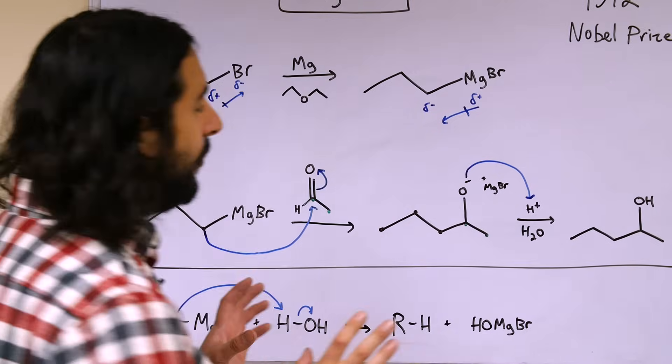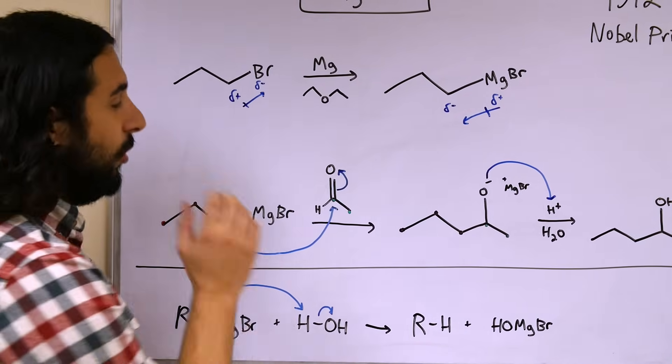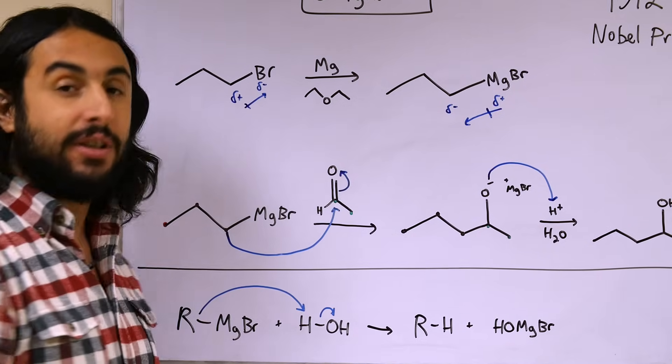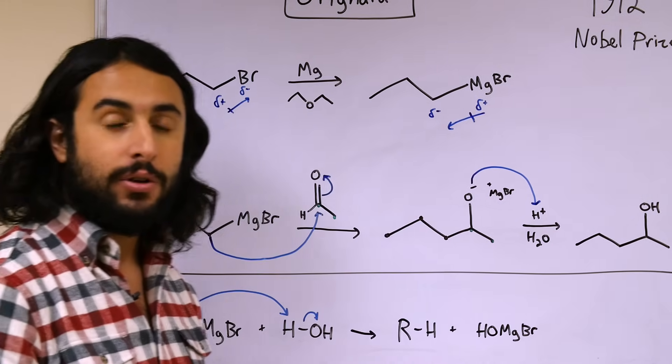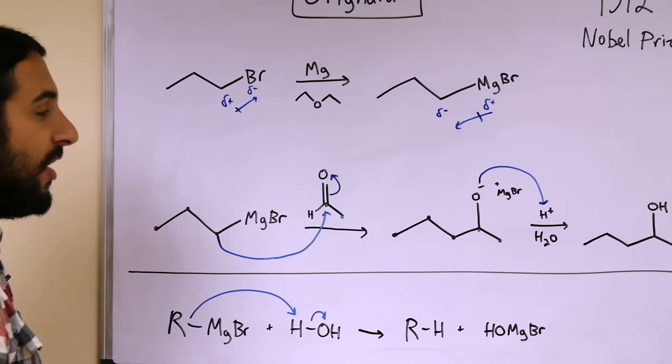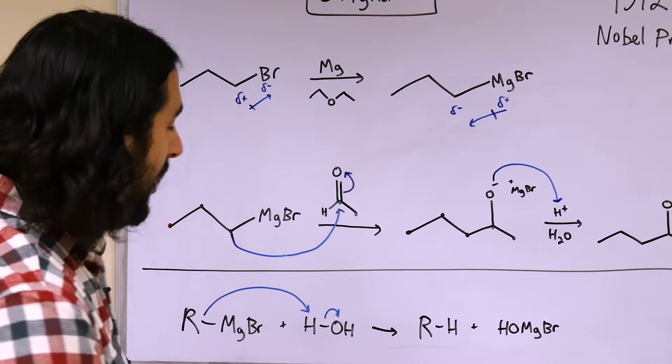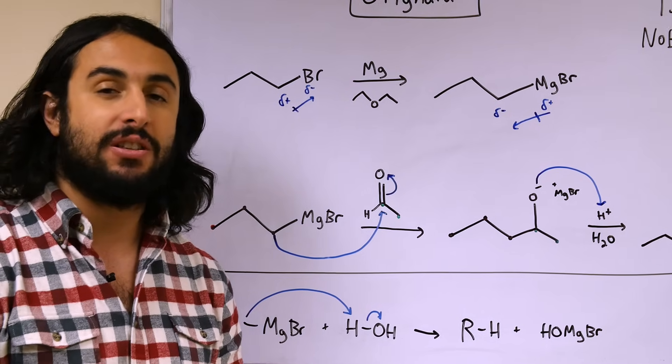So the one thing that we want to summarize is that a Grignard reagent will react with a carbonyl containing compound in order to generate an alcohol. So Grignard products are alcohols, they must have a hydroxyl group in them. And then the one thing that we want to understand here is that Grignard reactions must be done in strictly anhydrous conditions.